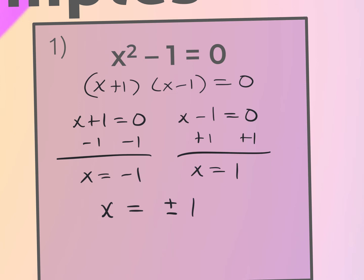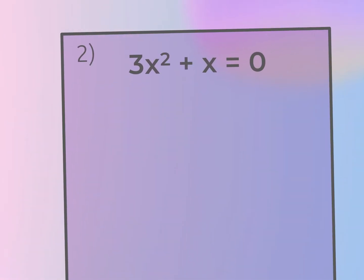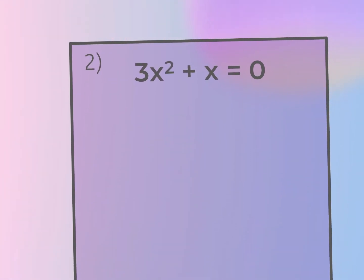Again, at some point in most every chapter we do factor, so just be ready for it. For number two, it's already set equal to zero. The first thing I need to do is look to see if I can factor out a GCF — yes, I can. My GCF here is x, so I'm going to divide both of these by x, and I'm left with x(3x + 1).